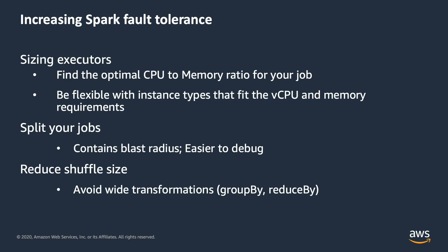In terms of increasing fault tolerance for your Spark applications, customers need to think about sizing their executors. You want to find the optimal CPU-to-memory ratio for your job when moving applications from on-premises to EMR, and be flexible with instance types that fit the vCores and memory requirements. Another tip is to split your jobs to contain the blast radius, which also makes debugging much easier. You also want to reduce the shuffle size to avoid wide transformations using predicates such as group by and reduce by.